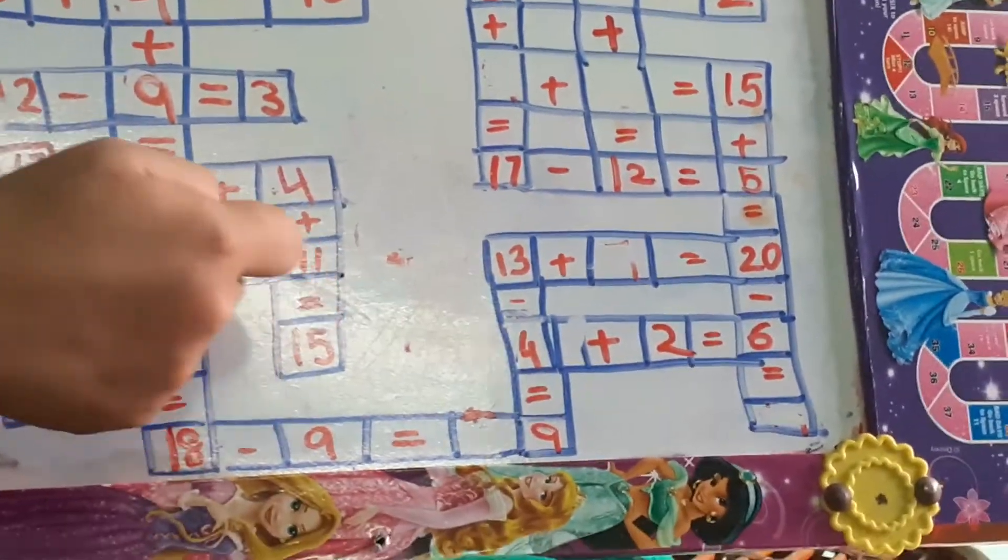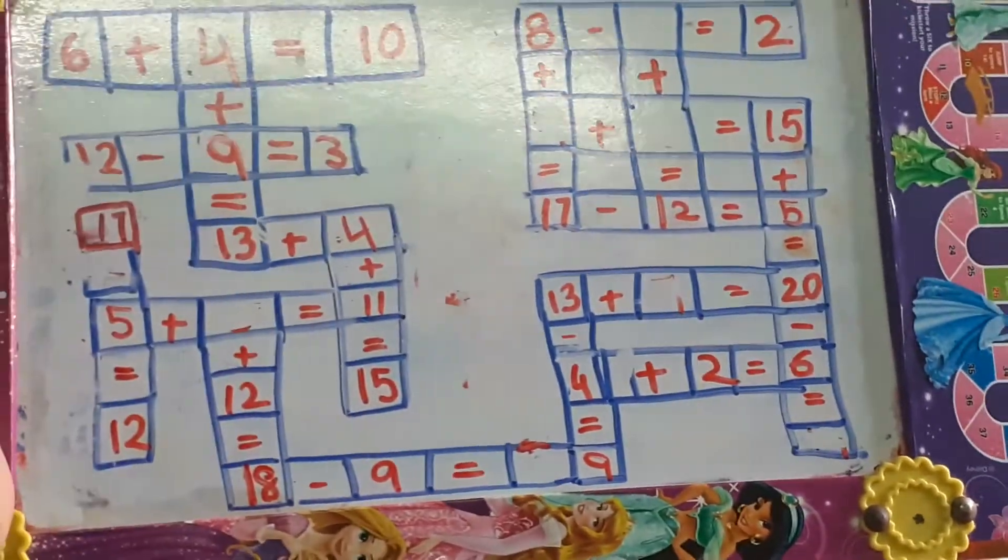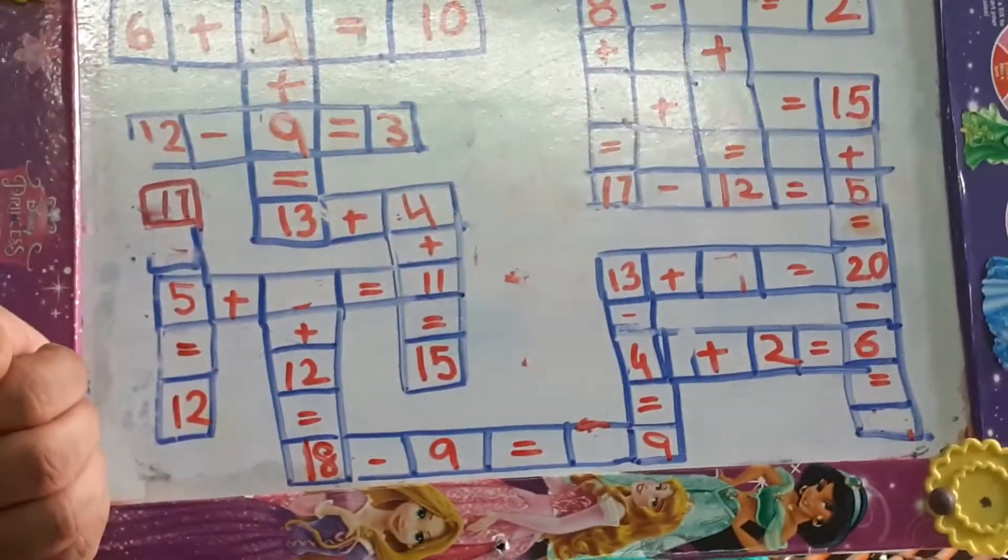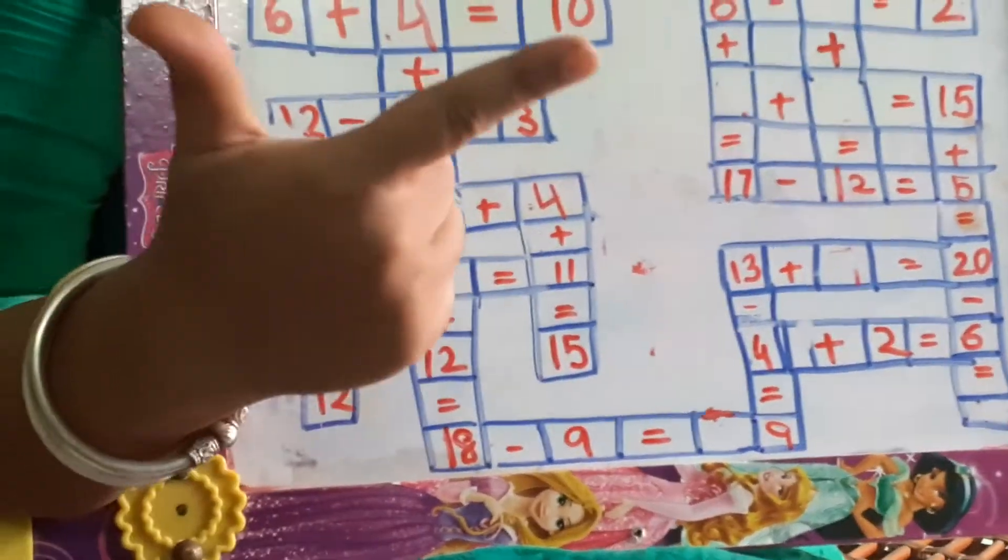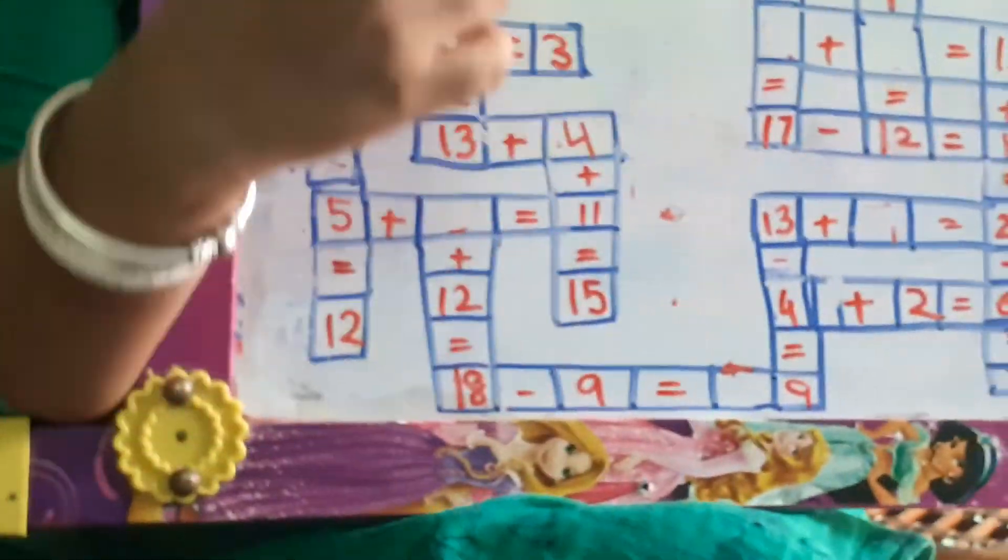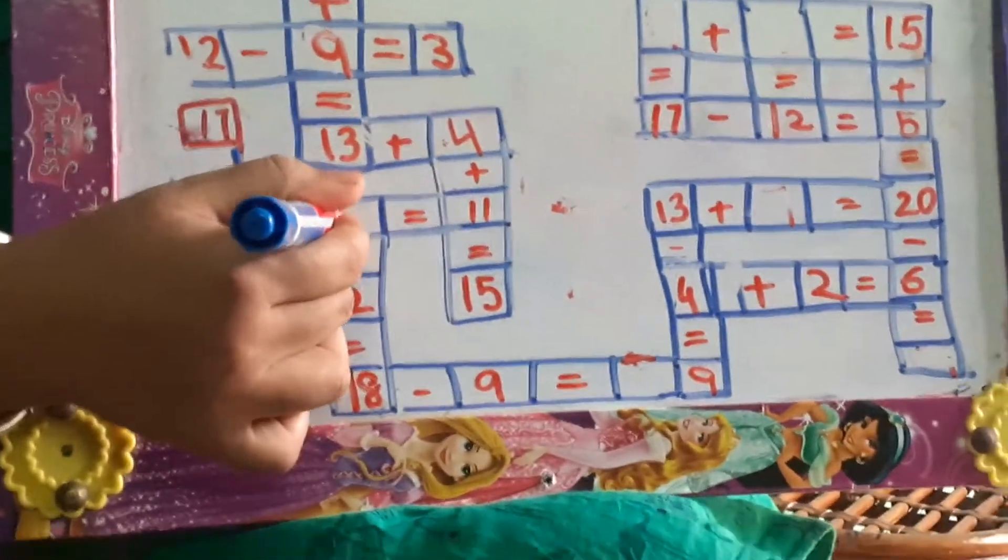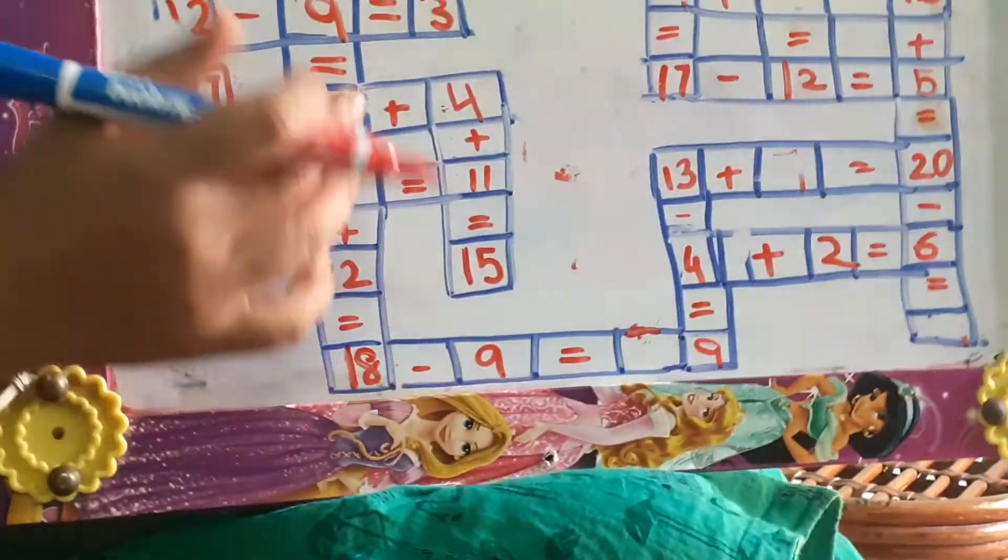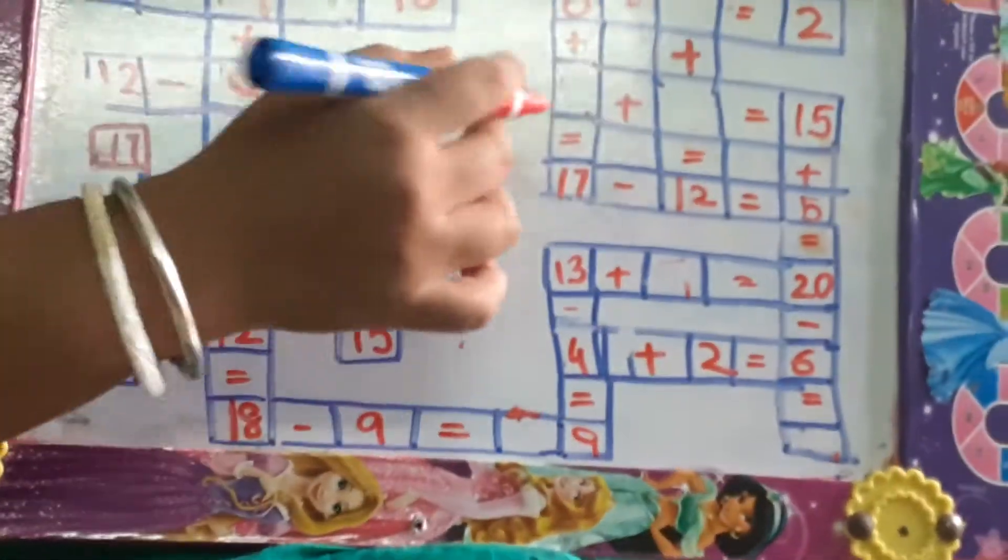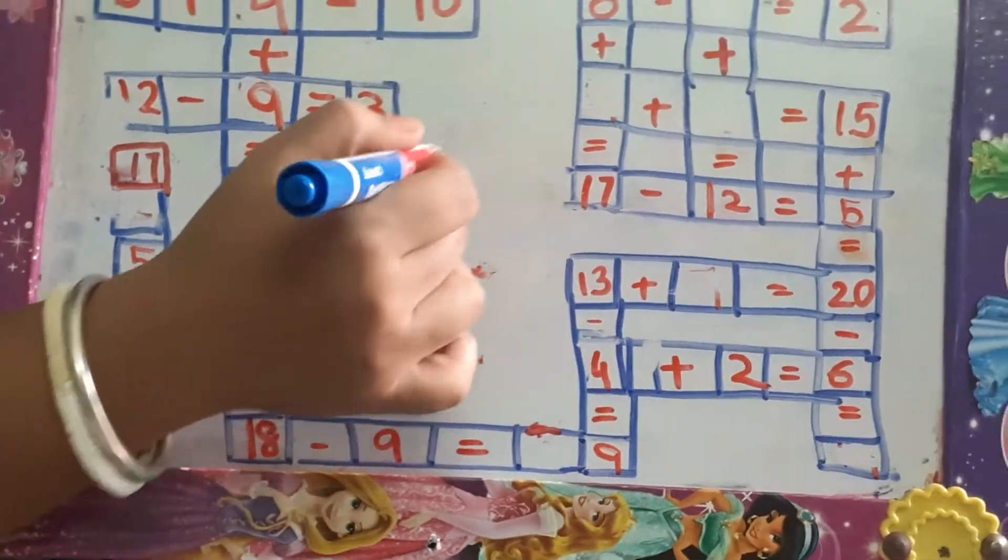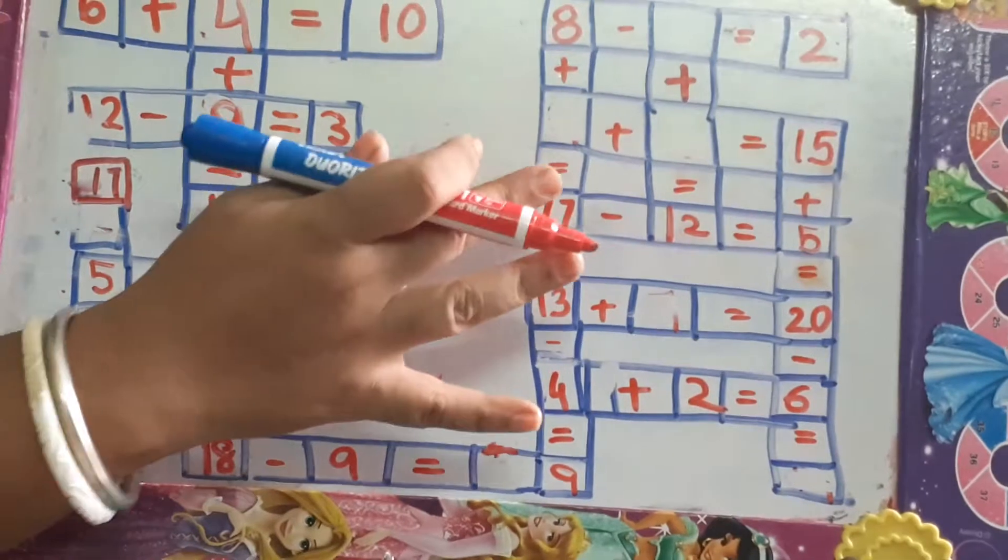So next is, see this, there is a blank here. 5 plus dash is equal to 11. So 5 after, this is addition means we have to go forward. 5 after, 6, 7, 8, 9, 10, and 11. This is 6. So when we got this, as we solve, we will get the connection to the next puzzle. Here it is joined. I have erased it.